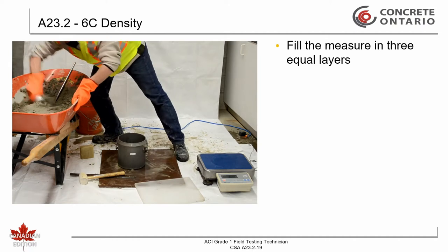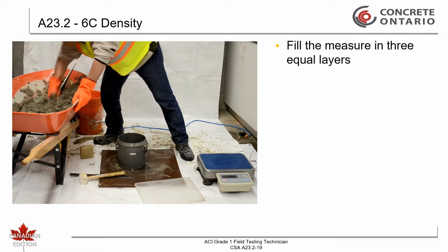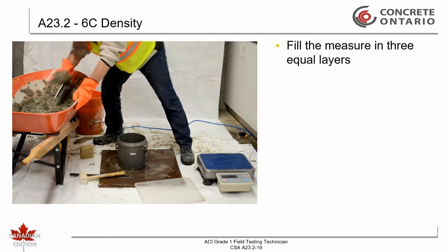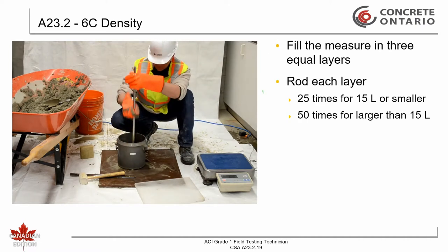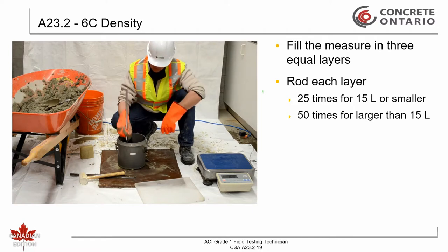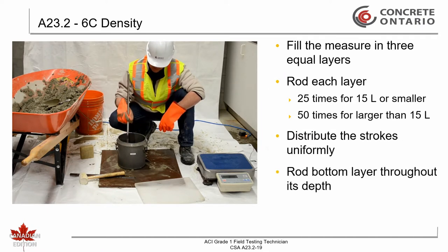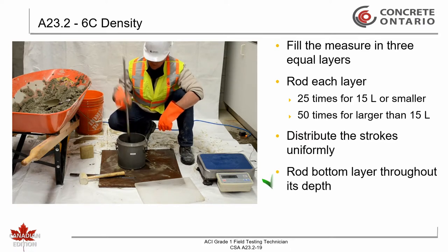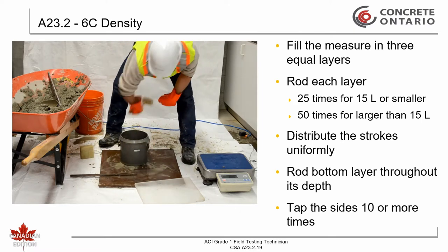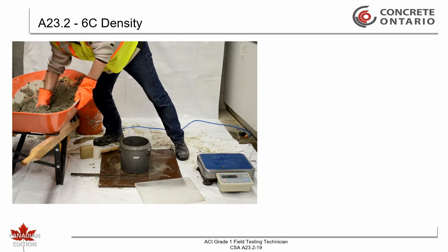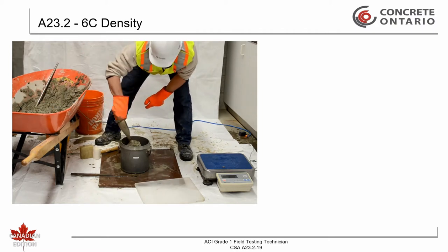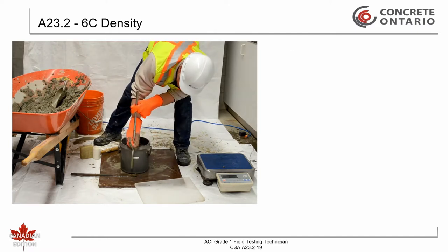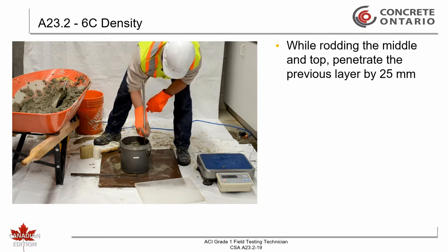Place concrete in the measure in three approximately equal layers. Consolidate the concrete by rodding. Rod each layer 25 times if using a measure equal to or smaller than 15 liters, and 50 times when a measure is larger than 15 liters. At each layer, distribute the strokes uniformly over the cross section, rodding the lower layer throughout its depth without forcibly striking the bottom. After rodding each layer, tap the sides of the measure 10 or more times with the rubber mallet until no large bubbles of air appear on the surface and the voids left by the tamping rod are closed.